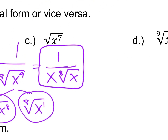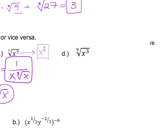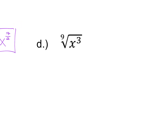Letter C is the square root of X to the seventh — that makes this a two in the denominator of the exponent. Since it's already in radical form, write it in rational form as X to the seven over two power. Letter D is the ninth root of X to the third. Rewrite rationally: take the power divided by the root — three divided by nine — which gives X to the one third power.